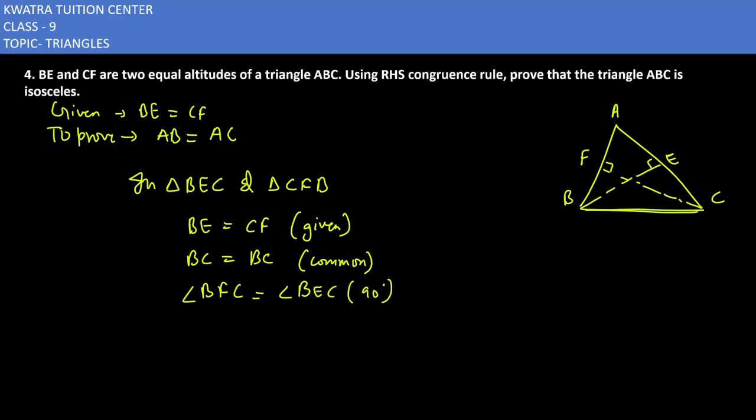Now if we have 90 degrees, then we have triangles which are congruent. Triangle BEC is congruent to triangle CFB. By which congruency? RHS, because this is my right angle.